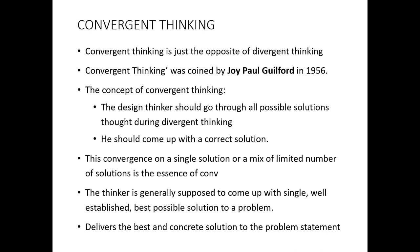In convergent thinking, we may have more than one solution which is workable. The design thinker goes through all these ideas and finds that around two or three are really workable. Then they identify among these which one will be most suitable for the problem and focus on that solution. The thinker is supposed to come up with a single, well-established, and best possible solution to that problem. In this way, convergent thinking ensures that the best solution will be delivered for that problem statement.